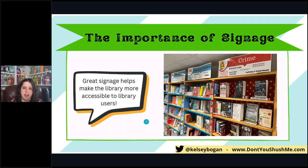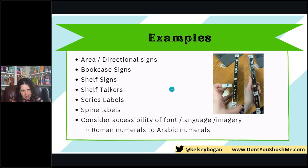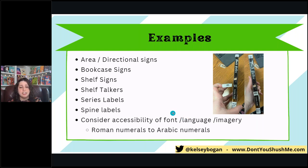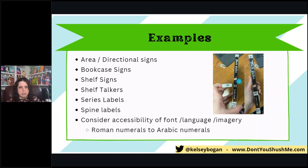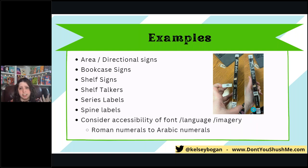Great signage helps make the library more accessible and has to be accessible itself — readable, in a language most users use, with imagery where helpful. One example: students kept coming to ask me which number of the Black Butler manga volumes it was, because the series uses Roman numerals and my students don't know Roman numerals. When the fifth person asked, I just printed Arabic numeral labels and covered the Roman numerals. Now students can determine which book they need on their own — a small change that removes a real barrier.